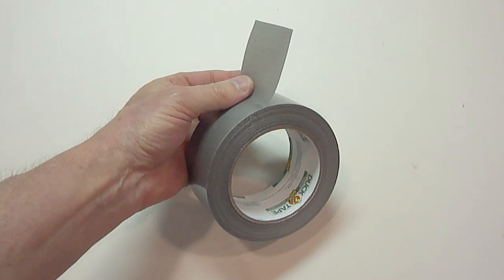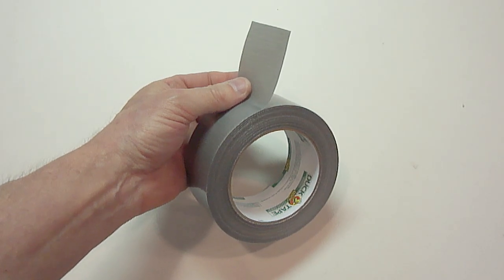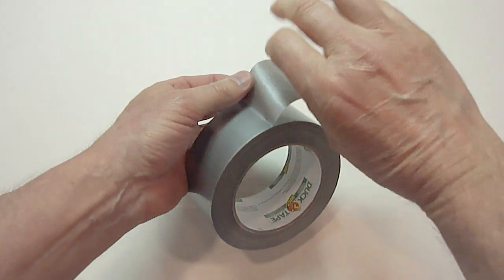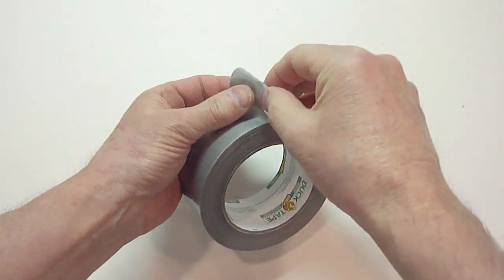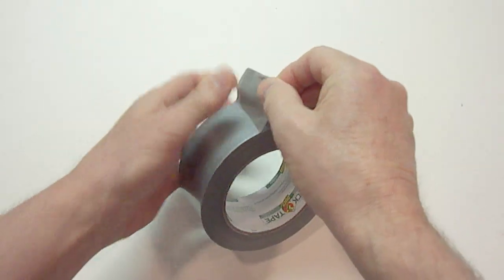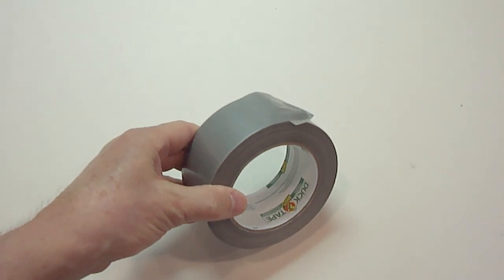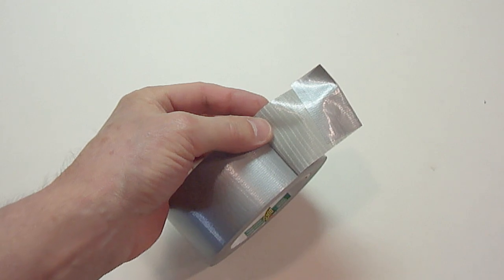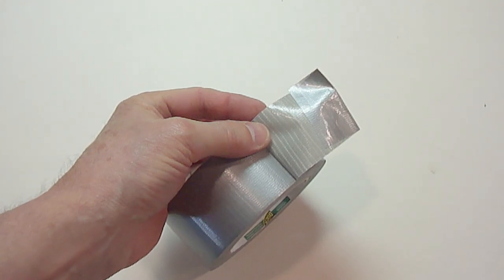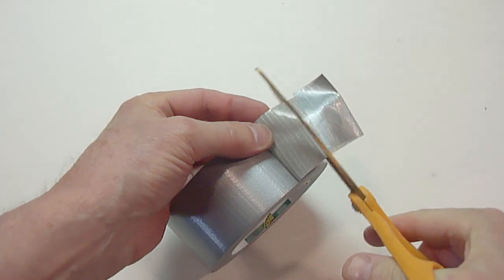The second way is when you're done using the tape, just take the end of the tape and fold some of the sticky side of the tape over onto itself. If you do this, the end of the tape will never get stuck again. When you need to use the tape again, just lift some of the tape up and trim the edge off with a pair of scissors.